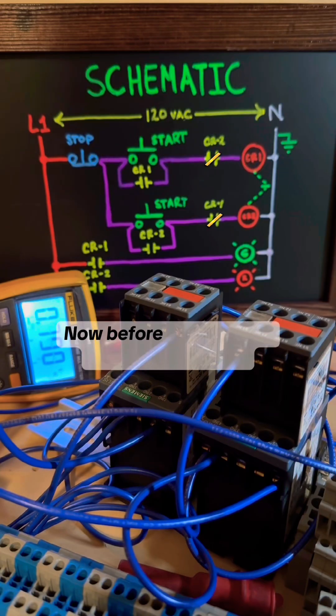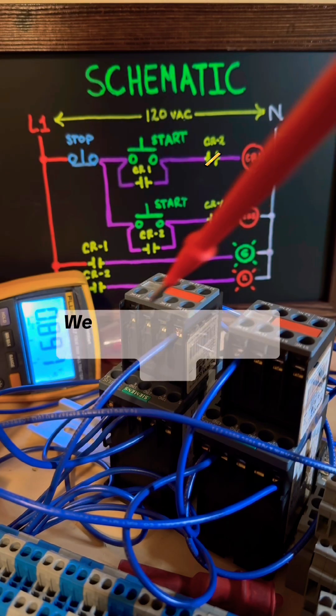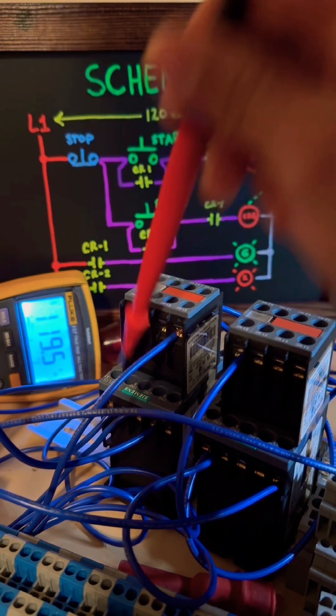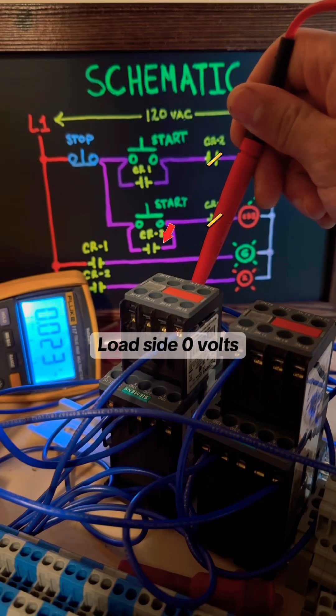Now before we energize control relay number two and our red light, let's take note of some readings. We start with line side of our holding contact, 120 volts. Load side, zero volts.